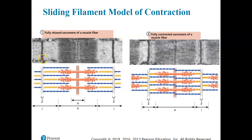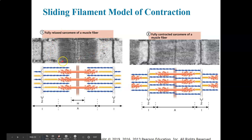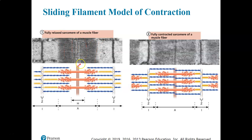Let's look at some micrographs. Here is a relaxed sarcomere of a muscle fiber. You can see the half I-band here, the A-band here, and the H-zone with the M-line down the middle. We have only thin filaments in the I-bands, and a mixture of thin and thick filaments in the A-band. When we contract, you can see that these I-bands get much, much shorter, and the Z-discs end up moving closer together.